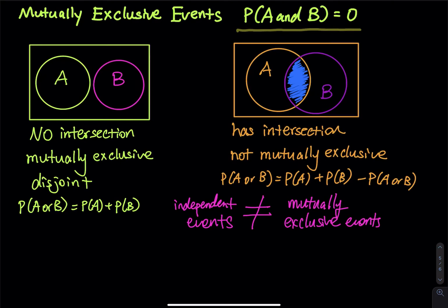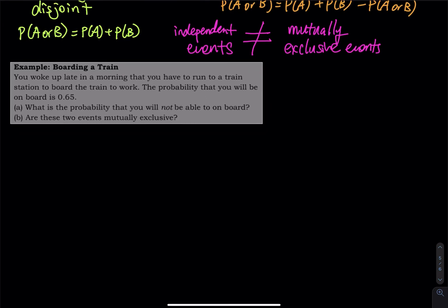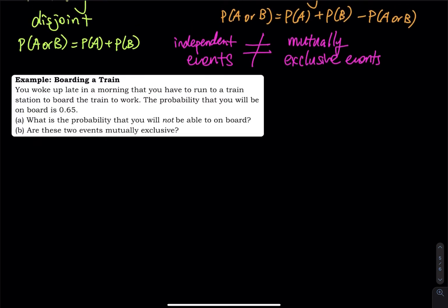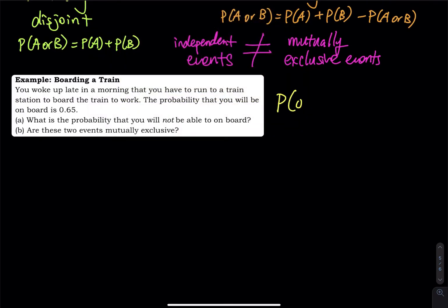Let's take a look at an example. Boarding a train, you woke up late in the morning that you have to run to a train station to work. The probability that you will be on board is 65%. So probability of on board is 0.65. That means you are in the train.